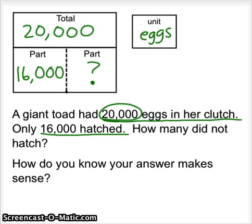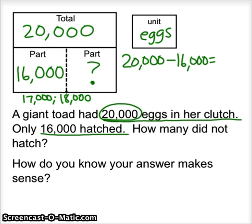Our unit is eggs. We need to take the total, which is 20,000, and find the difference between 20,000 and 16,000. If we find the difference between those two numbers, that will tell us how many eggs did not hatch. So, 20,000 minus 16,000. I could use the counting up method. I could start at 16,000 and count by thousands: 17,000, 18,000, 19,000, 20,000. Counting by thousands, that's 1, 2, 3, 4. It took 4,000s to count up from 16,000 to 20,000.